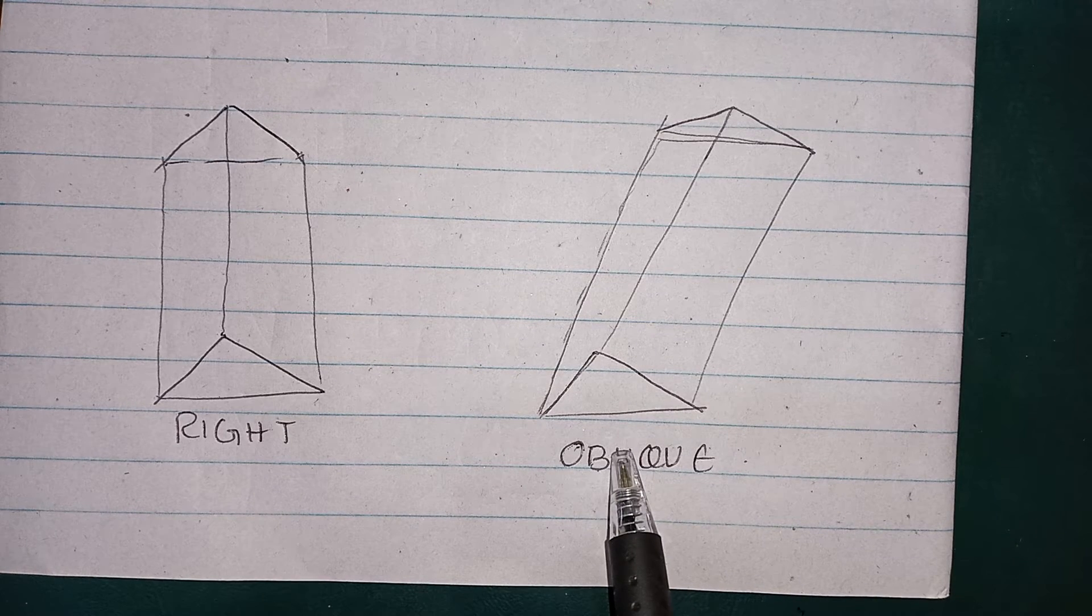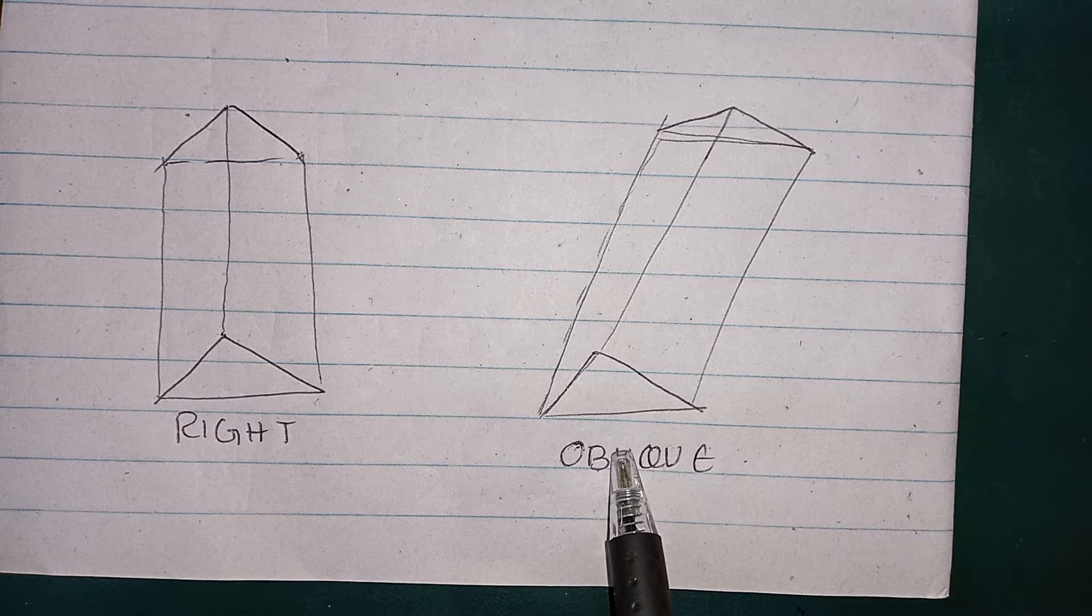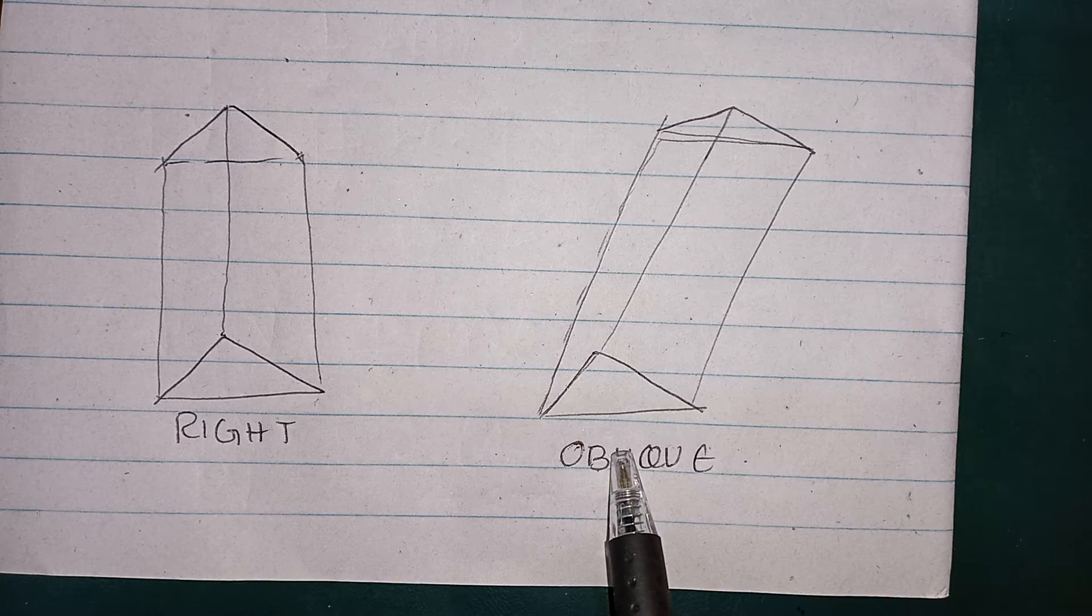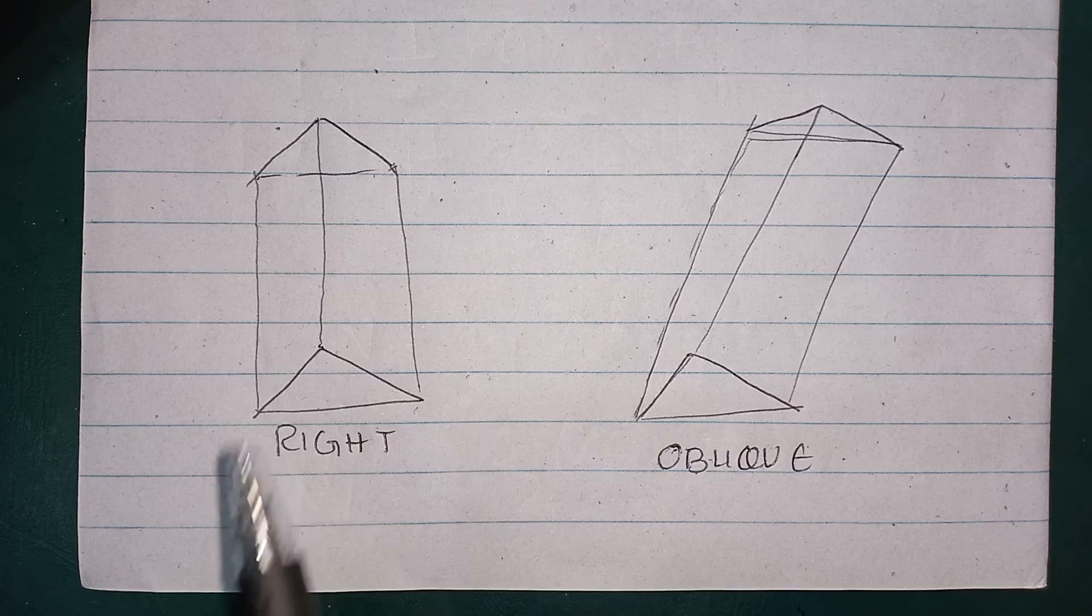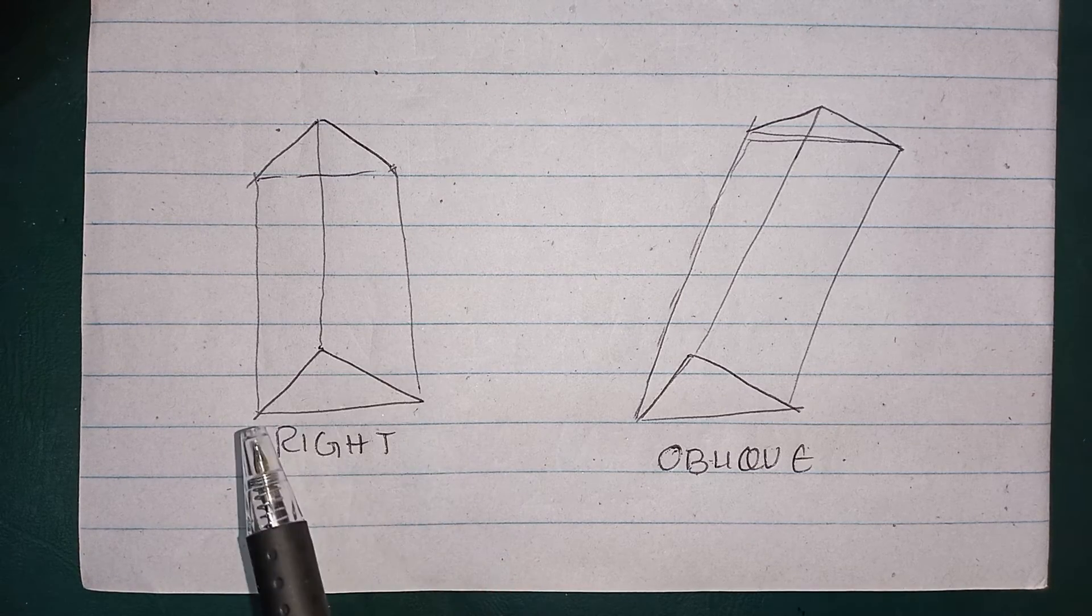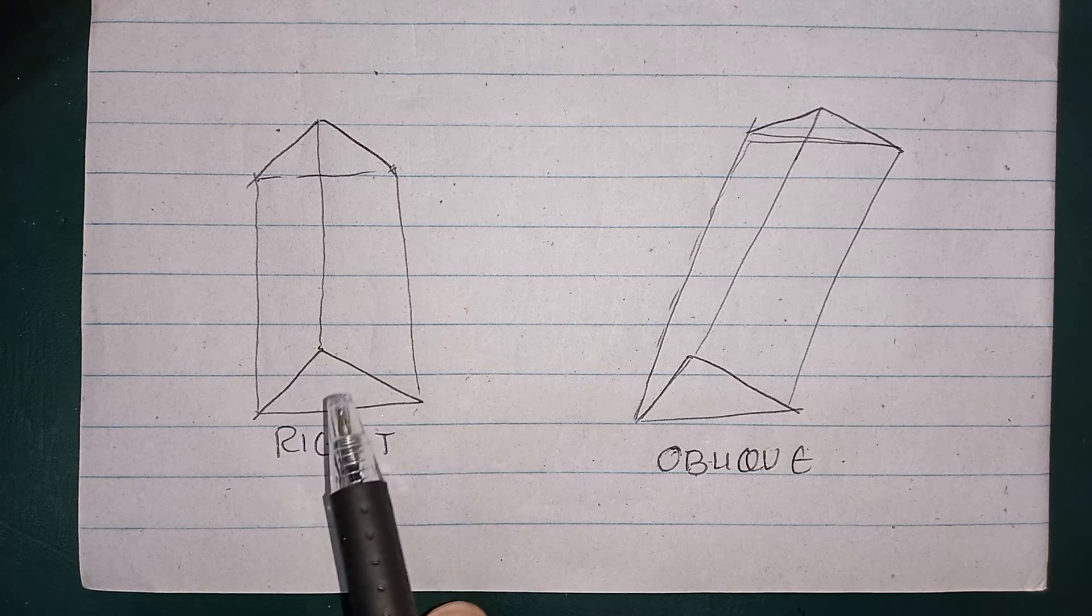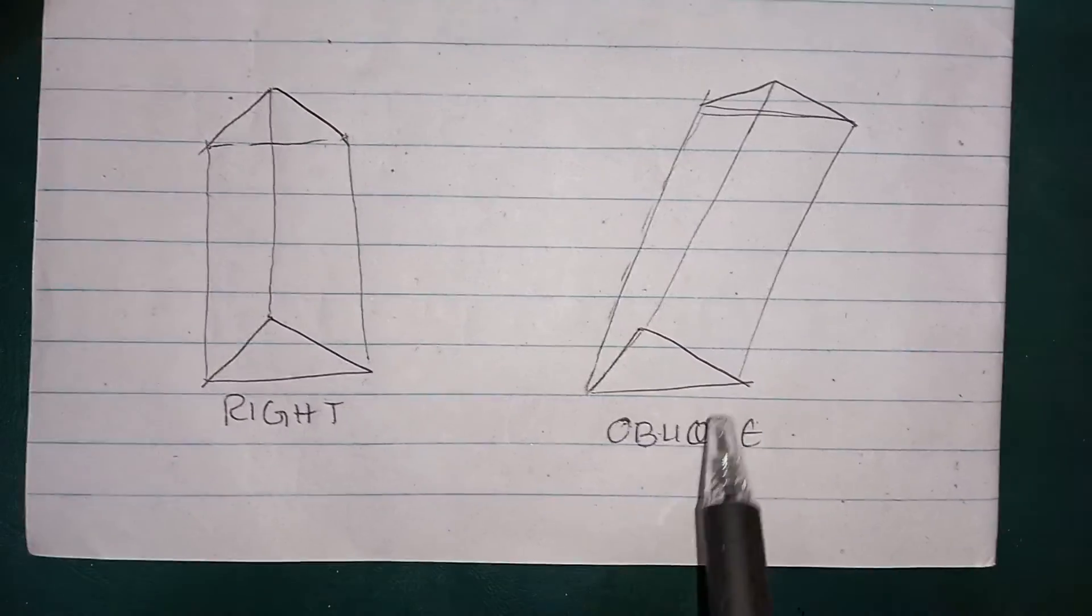I hope that you understand what is the difference between right and the oblique prism. In the right, the lateral faces and the base faces are at right angle to each other and they are parallel.